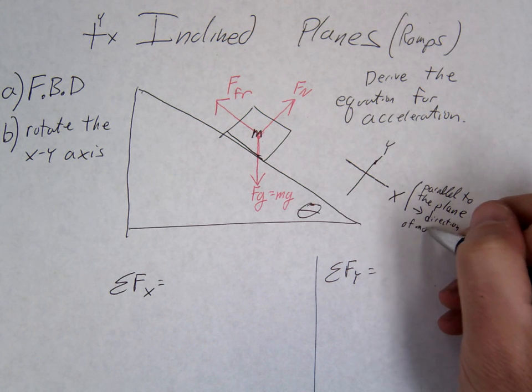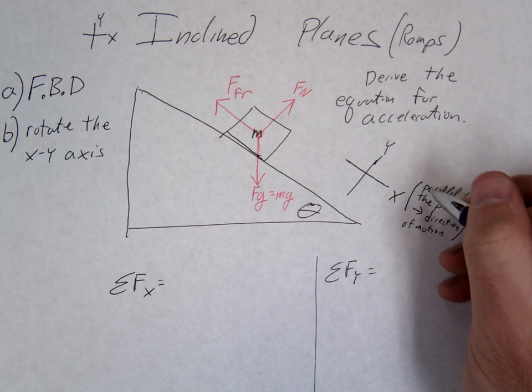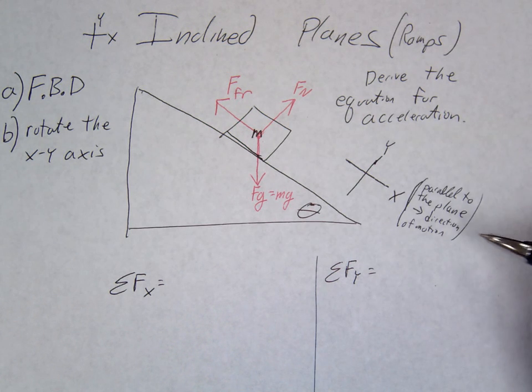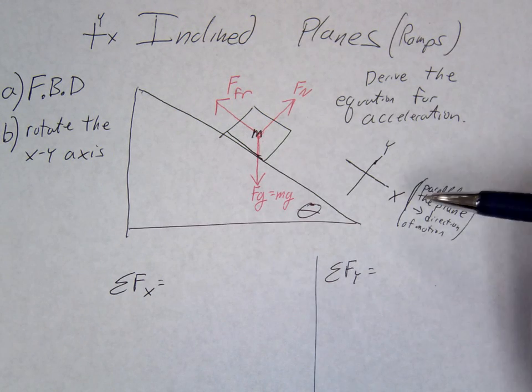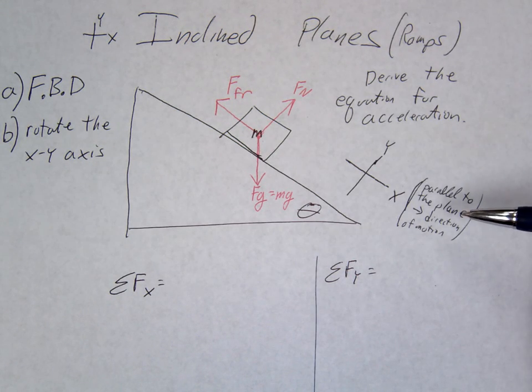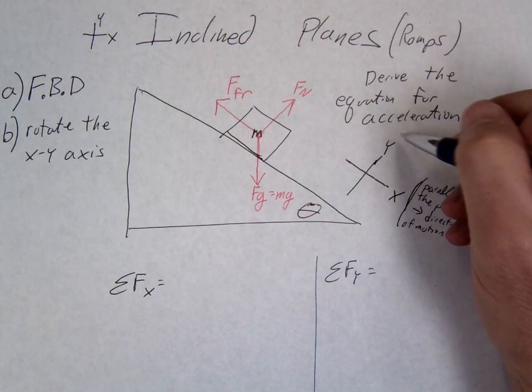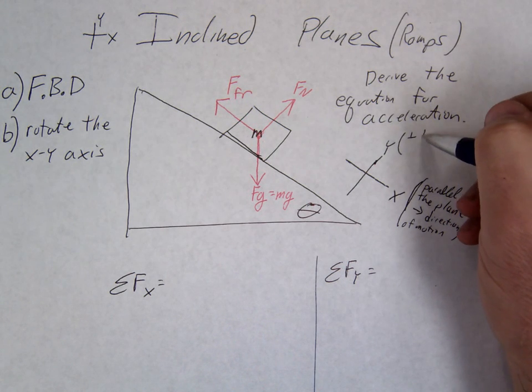And we're rotating it so that the x-axis is in the direction of the motion. So this would be parallel to the plane. But more specifically, it's going to be, essentially, it represents the direction of motion. And if you remember, like all the problems we've been doing the last several days, the direction of motion has always been the x-axis.